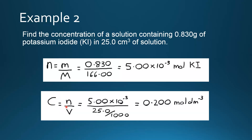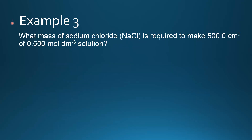Next we use C equals N over V. N is 5.00 times 10 to the negative 3 moles, divided by the volume of 25.0 divided by 1000 to get decimeters cubed. That gives us a concentration of 0.200 moles per decimeter cubed.